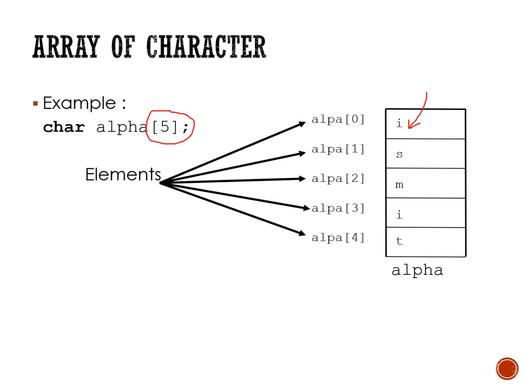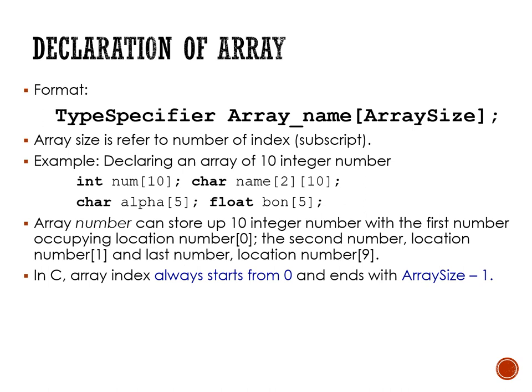Remember, the values i, s, m, i, and t are called elements, while 0, 1, 2, 3, 4 are the indexing. In this character variable declaration, 'alpha' will contain or store five alphabet characters. To declare an array, you need to specify the data type, the variable name, and the size of the array — just like the examples: integer h and character alphabet.